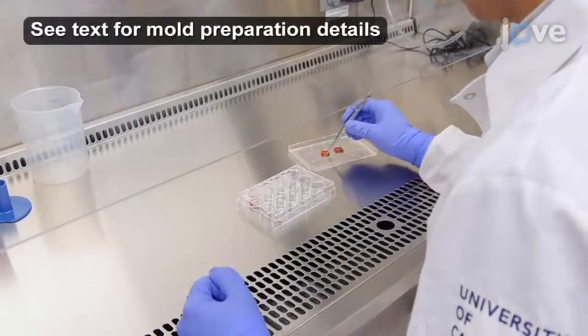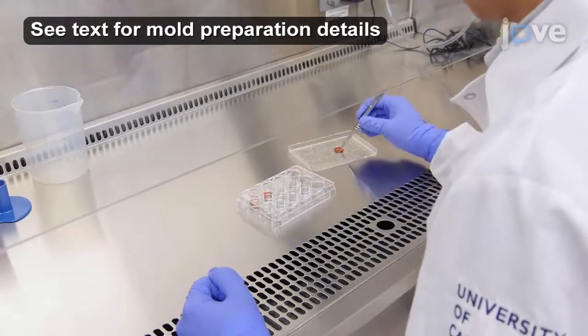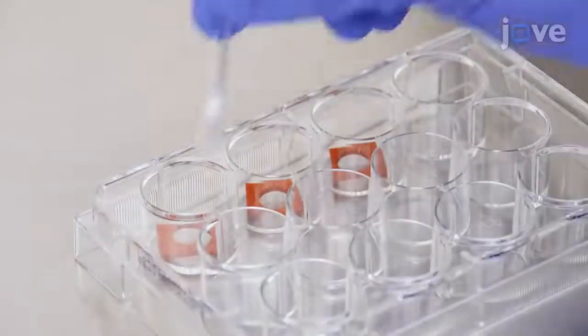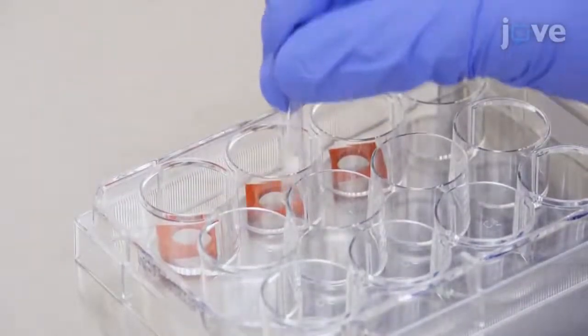To begin, place clean dry silicone rubber molds into each well of a non-tissue culture-treated 12-well plate and use the clean blunt end of a pipette tip to adhere the molds to the bottom of the plate.